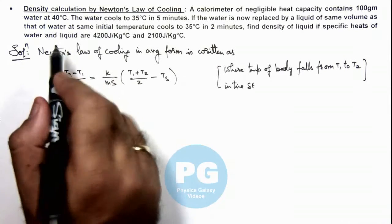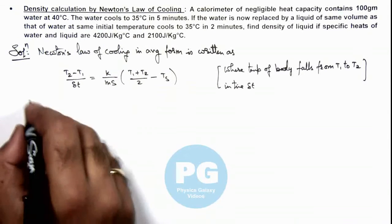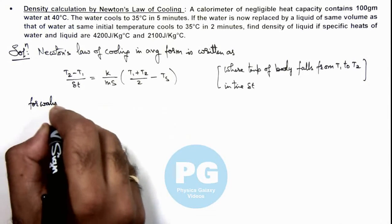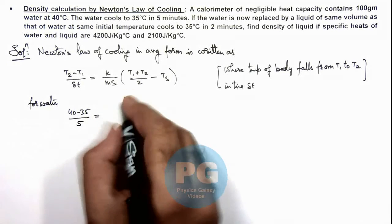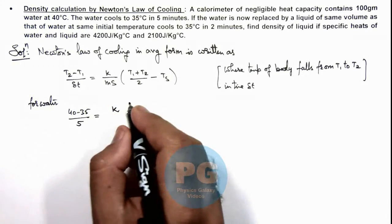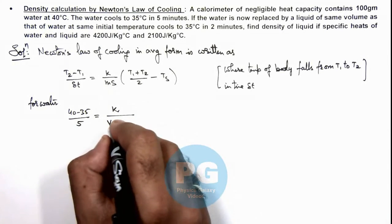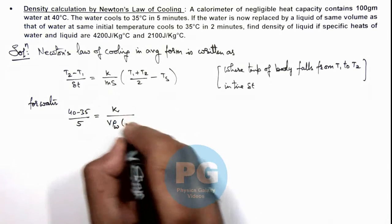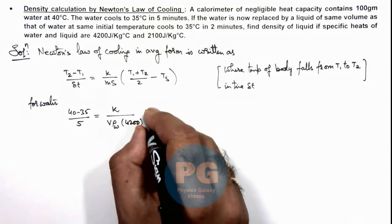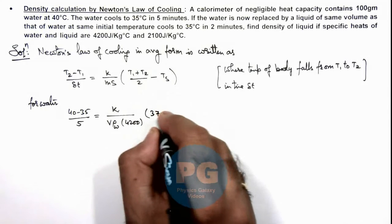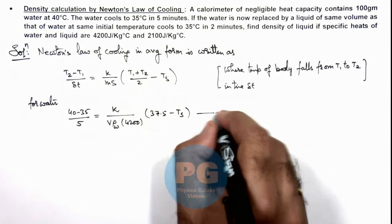Here in the first case we are given that water cools from 40 to 35 degrees Centigrade in 5 minutes, so we can write for water: 40 minus 35 divided by 5 is equal to k, a constant, divided by mass of water. We can write volume multiplied by density of water, multiplied by specific heat of water which is given as 4200, multiplied by T1 plus T2 by 2, here is 37.5 minus Ts which is surrounding temperature, a constant. Say if this is the first equation.